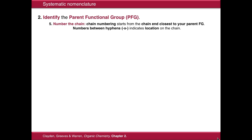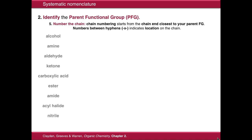Now we have to number the chain. Chain numbering starts from the chain end closest to your parent functional group, as we saw on the previous slide, and we insert that as a number between hyphens as a location on the chain. We're now going to go through nomenclature for some common parent functional groups.